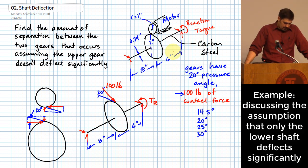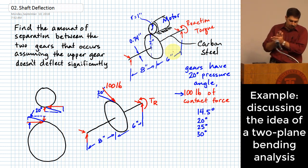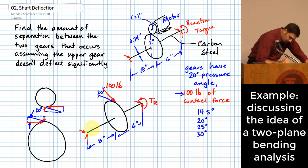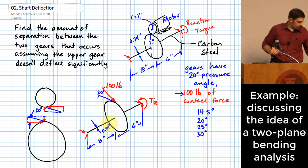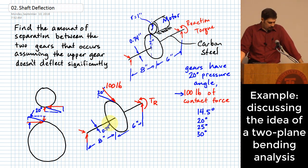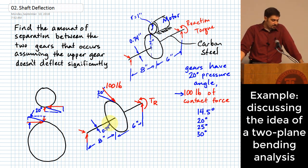If you had enough information and data, you could do a very similar analysis for the upper shaft. Now, where do we go from here? We're supposed to determine the amount of separation between the two gears, and we know the diameter of this shaft is 0.74 inches. One suggestion is to separate the contact force into components. That is tempting, and there are cases where that is important to do.